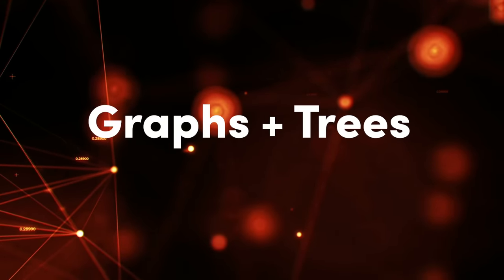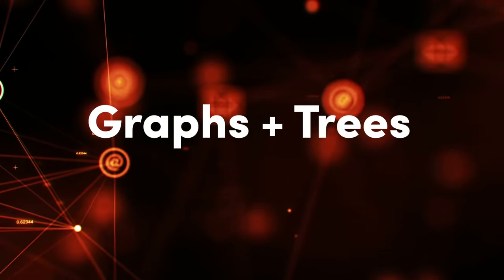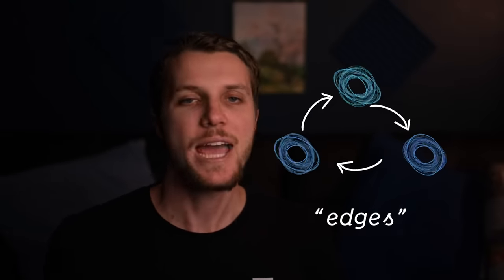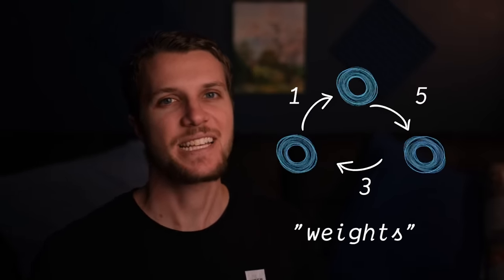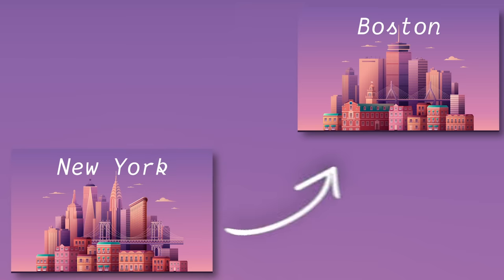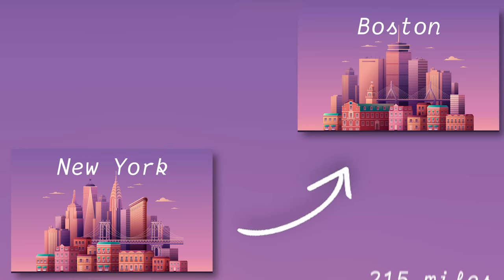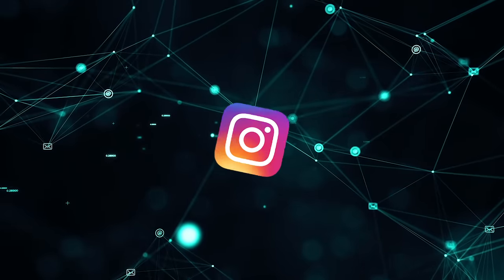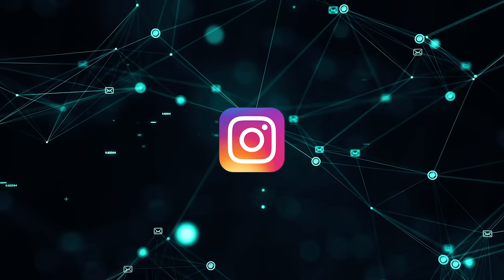Finally we're gonna talk about graphs and trees. This one is so big that there's an entire field of computer science called graph theory. A graph is basically similar to a linked list where you have nodes pointing to other nodes, except in this case the pointers are called edges. Edges can also have weights or numbers assigned to them. Imagine two cities, New York and Boston — the road between them is the edge and the length of the road could be the weight of that edge. Complicated relationships like social media networks are also stored as graphs.